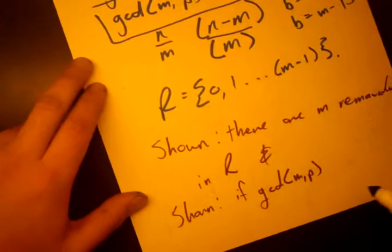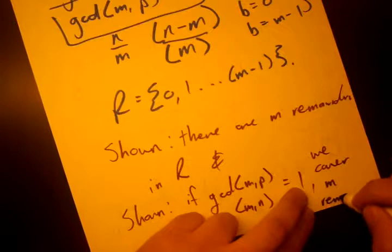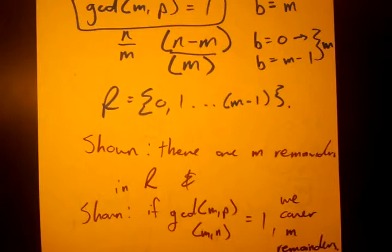And shown that if GCD M N equals 1, then we cover M remainders. Nearly done.